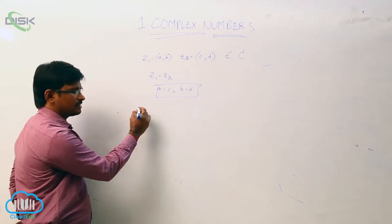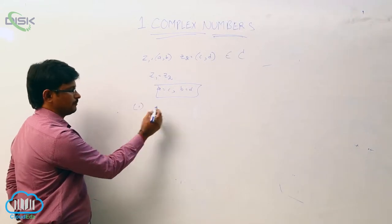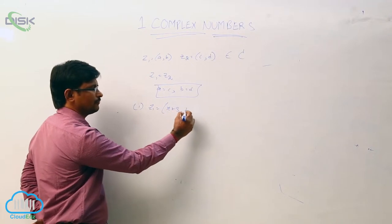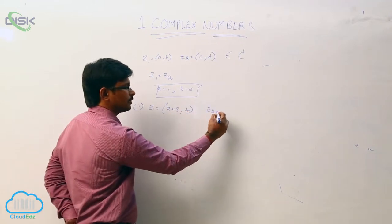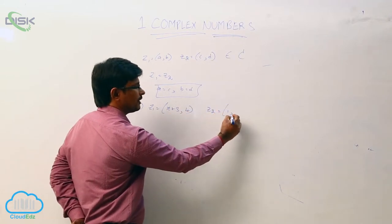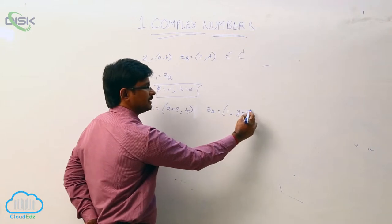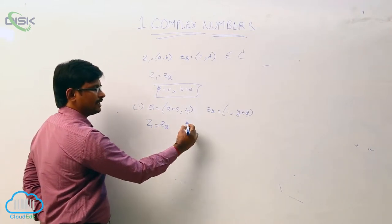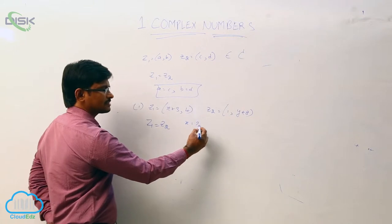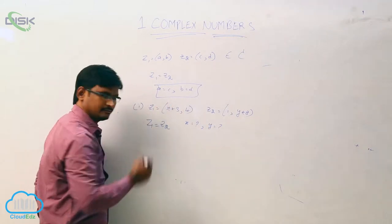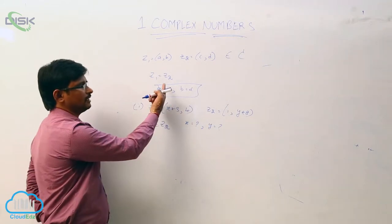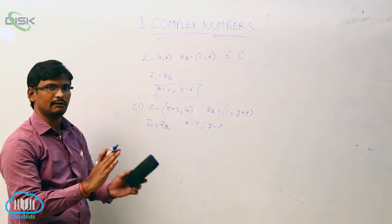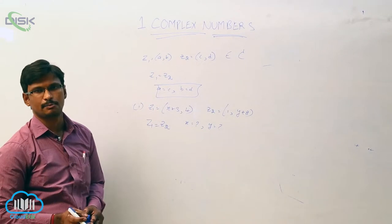Taking an example with two complex numbers: z1 = (x+3, 4) and z2 = (1, y+8). If z1 equals z2, we are asked to find the values of x and y. As per the definition of complex numbers, if z1 equals z2, we can equate the corresponding values.